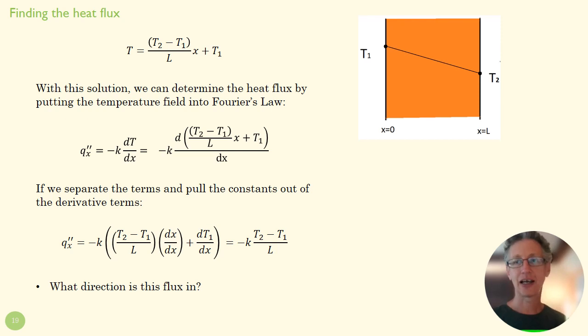And the last thing to kind of think about, or a couple of things, what direction is this flux in? We can figure that out mathematically. So let's imagine our picture here. T2 is less than T1. So that's going to be negative. And those two negatives are going to cancel out. So our flux is going to be left to right in our positive direction. Does that make sense? Sure. We have high temperature over here and low temperature over here. So we're going to see a flux in the left to right direction.